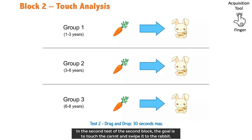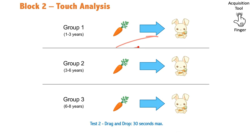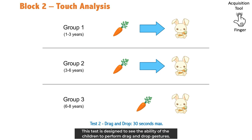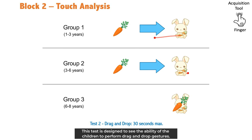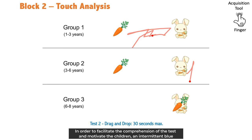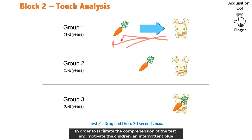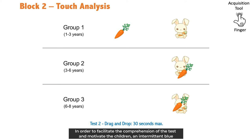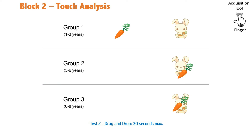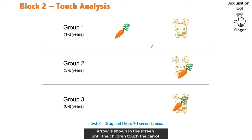In the second test of the second block, the goal is to touch the carrot and swipe it to the rabbit. This test is designed to see the ability of the children to perform drag and drop gestures. In order to facilitate the comprehension of the test and motivate the children, an intermittent blue arrow is shown on the screen until the children touch the carrot.